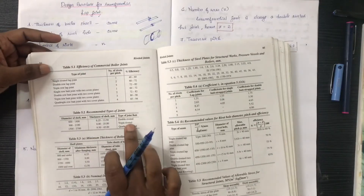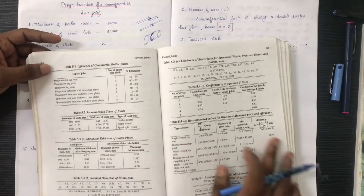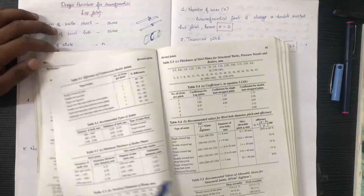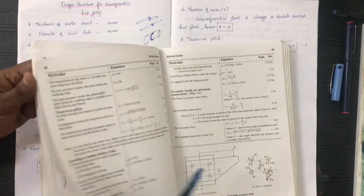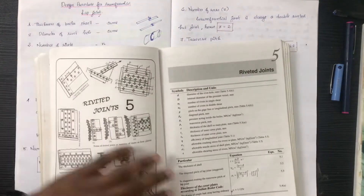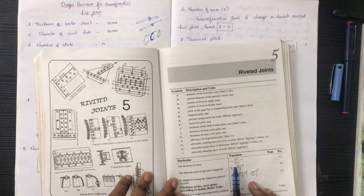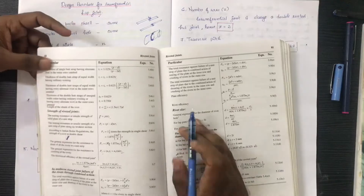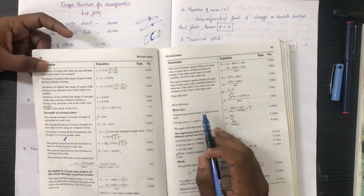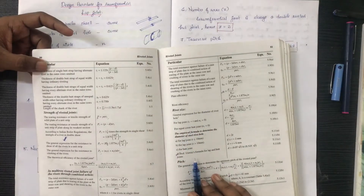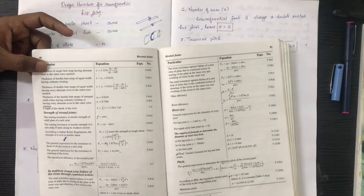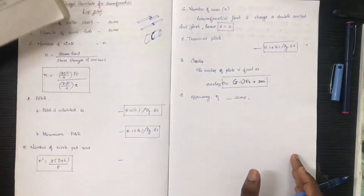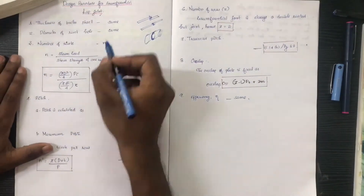We will display the above table and see what type of joint — lap joint or butt joint. The thickness of the boiler shell and the diameter of the rivet hole are covered under paper number 75 or 79. The thickness and diameter of the rivet hole are determined using Unwin's formula.